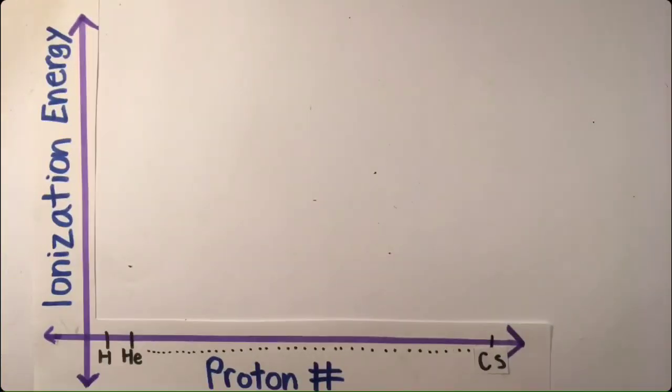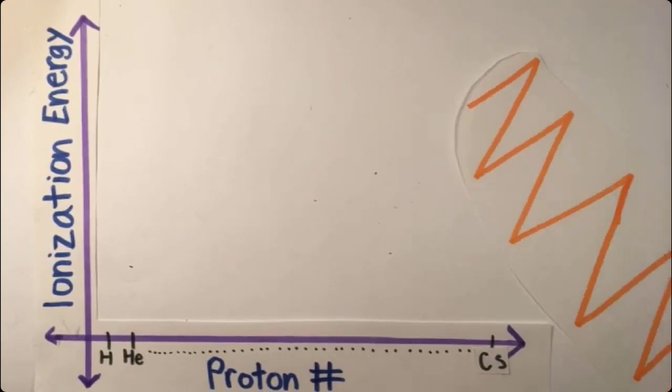It turns out that the nucleus has other tendencies that remind scientists of electrons. On a graph with the x-axis being elements increasing in protons and the y-axis being energy to remove a valence electron, or the ionization energy, a pattern emerges.